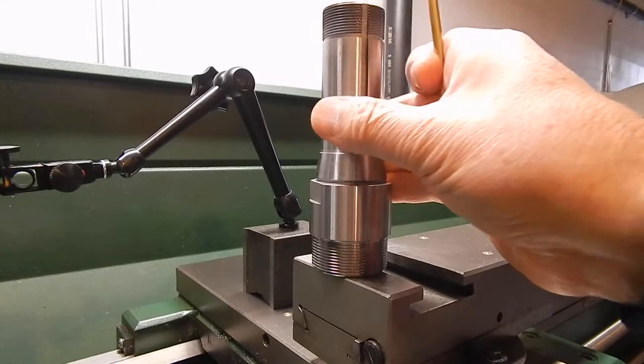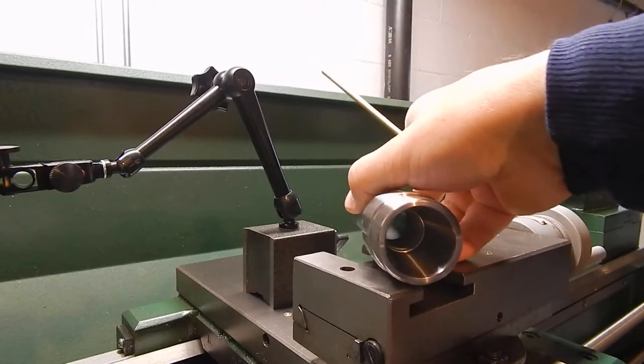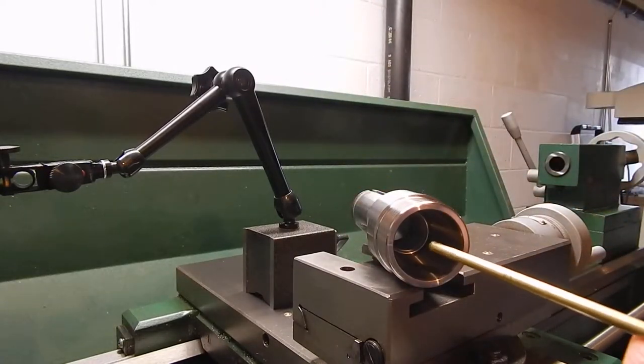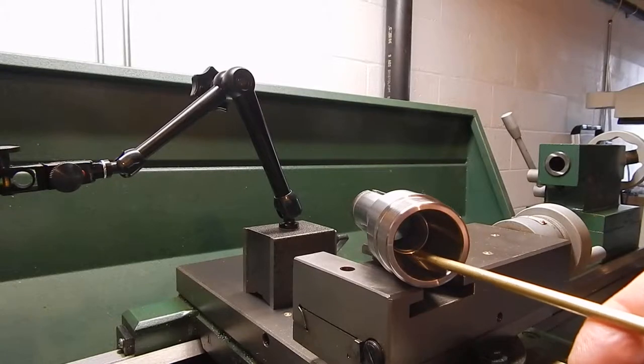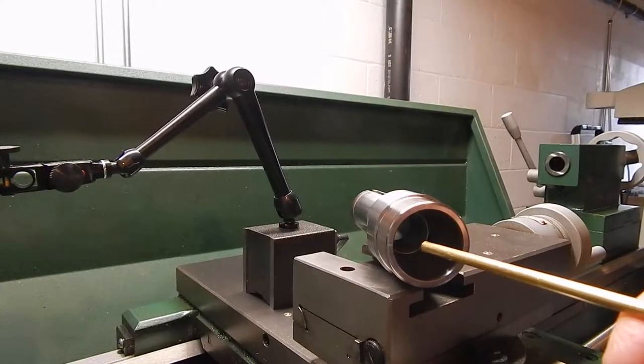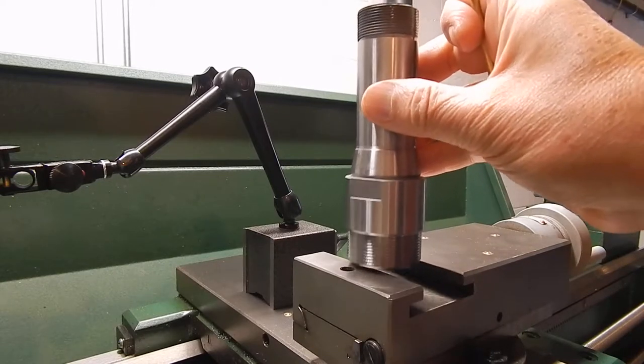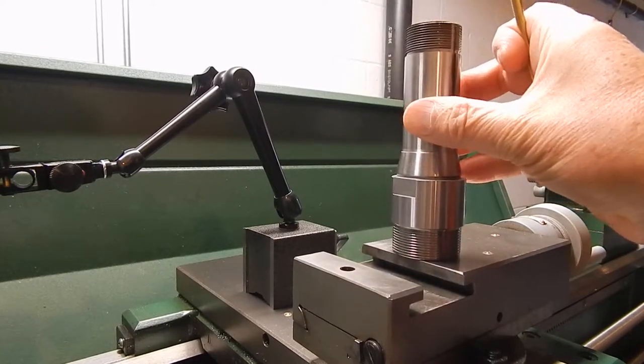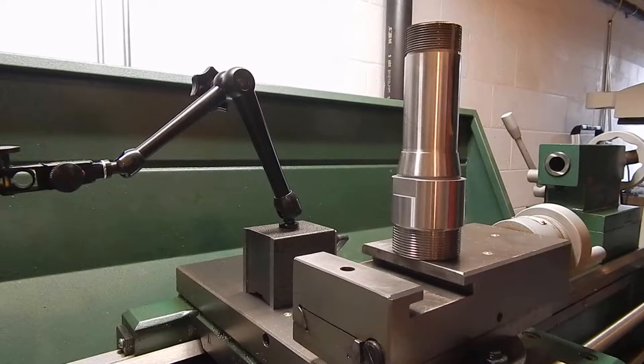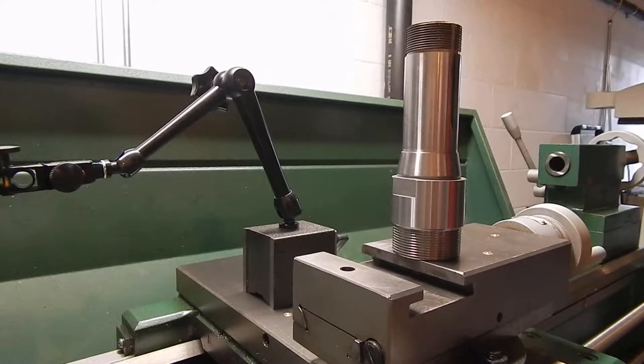The other end is an ER32 socket which accepts ER32 collets. It is important for such a tool holder to run with minimum runout, so let's see what we got here. We're going to use a lathe with a 5C chuck to check for runout.